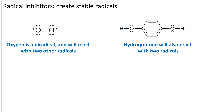Radical inhibitors create stable radicals. Oxygen, for instance, can react with two radicals via coupling, as can hydroquinone.